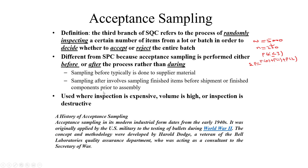Sampling after involves inspecting finished items before shipment or finished components prior to assembly. So acceptance sampling can be done before or after production — when you have 5,000 finished products, you do sampling to accept or reject. It is used mainly where it would be very expensive to inspect each and every product, such as checking every potato in a 1,000-potato shipment, which would be costly and time-consuming.